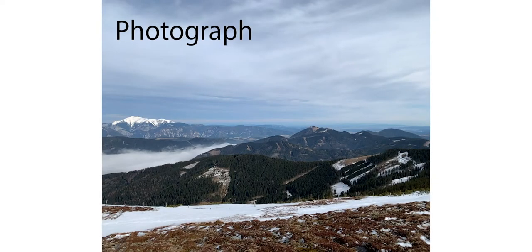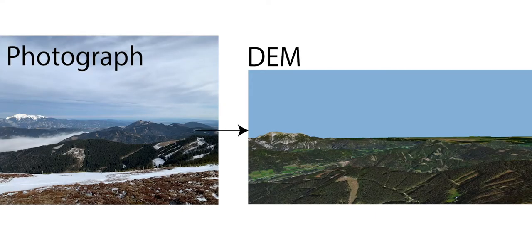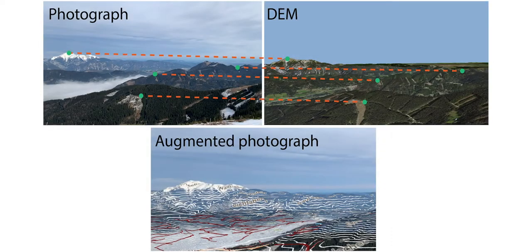We introduce a solution to large-scale augmented reality for outdoor scenes by registering camera images to textured digital elevation models, called DEMs. This is done by cross-domain descriptor matching of key points from the photograph and the DEM render. This allows us to estimate precise camera pose with respect to the rendered terrain. The estimated camera pose can be used to augment the photograph with novel information, such as contour lines, rendered here in white.